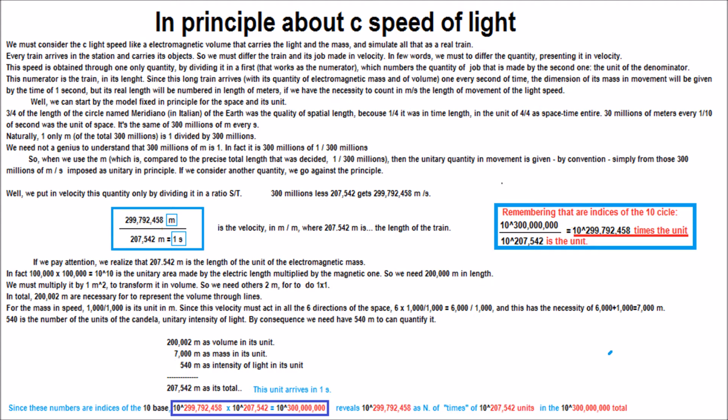Seriously, one only m of the total 300 millions is 1 divided by 300 millions.